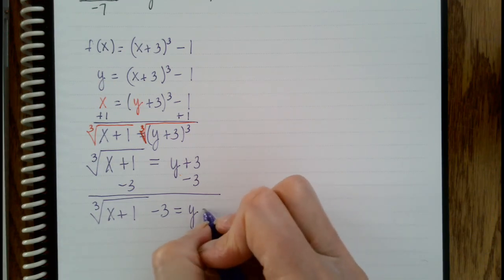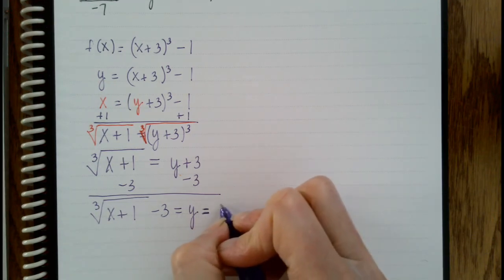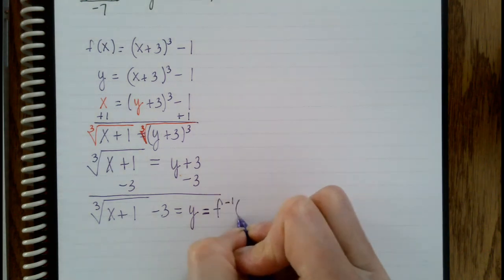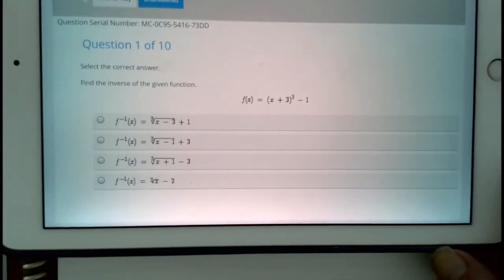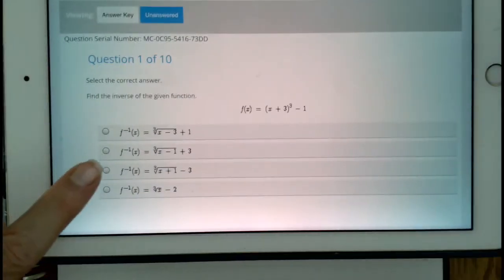But really in terms of the format here, this is the inverse. And this symbol, f to the negative 1 of x, is the inverse. But we can look back on here. And it looks like it's the third option on that problem.